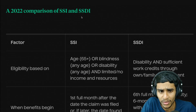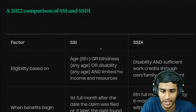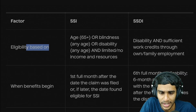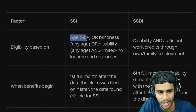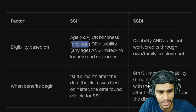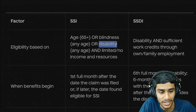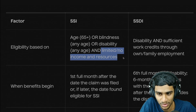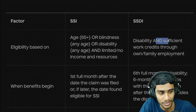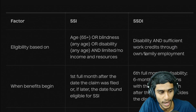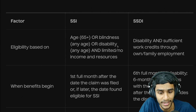Looking at eligibility: SSI recipients qualify if they are age 65 or older, or have blindness or a disability at any age, and have limited or no income and resources. SSDI recipients qualify based on having a disability and sufficient work credits through their own or a family member's employment.